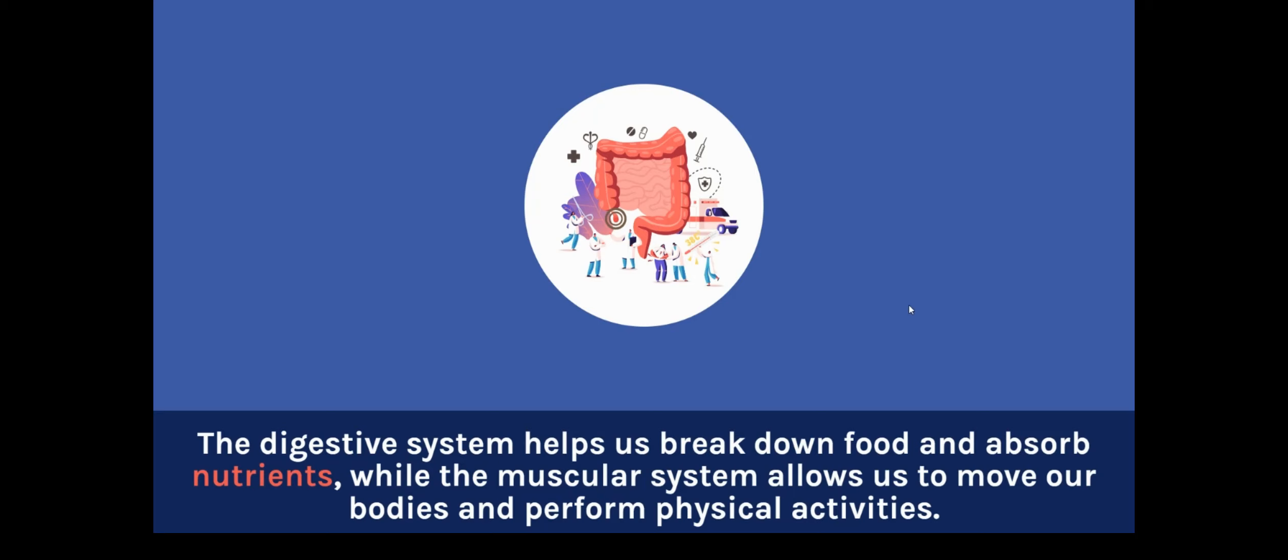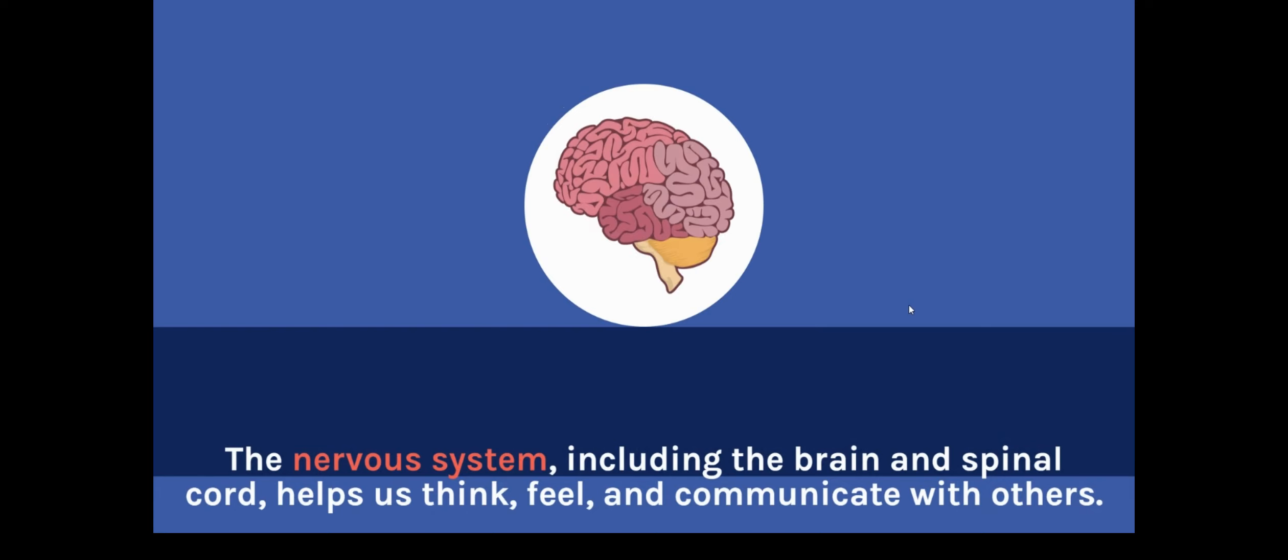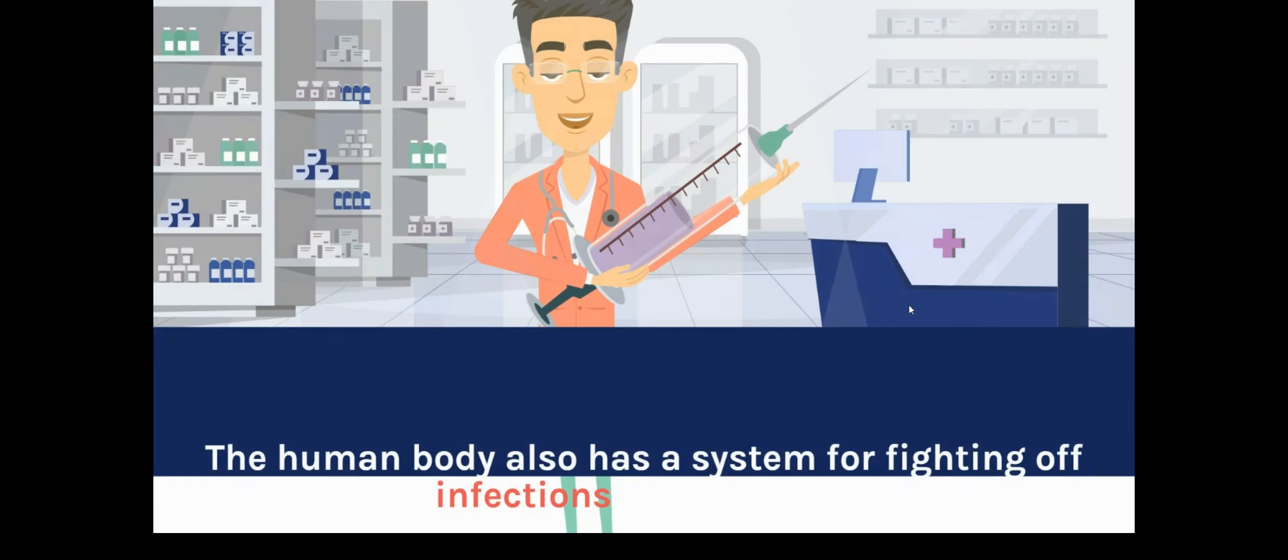The nervous system, including the brain and spinal cord, helps us think, feel, and communicate with others. The human body also has a system for fighting off diseases and infections called the immune system.